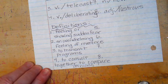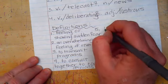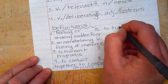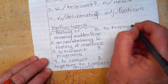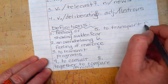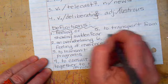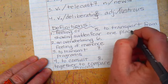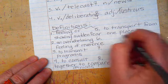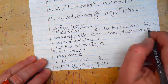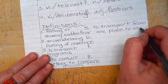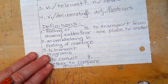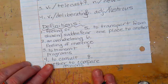I am squeezing that in on my last line there. Number five is convey, and convey means to transport from one place to another. Oh, I'm gonna have to squeeze this guy in too. I write way too big.